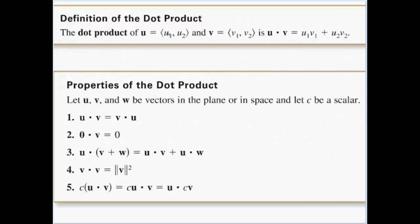Here's our definition of a dot product. The dot product of vector u, which would be u₁, u₂, and vector v, v₁, v₂, we write it as u dot v. We multiply the first components together, then add to that the product of the second components — and that's the dot product.